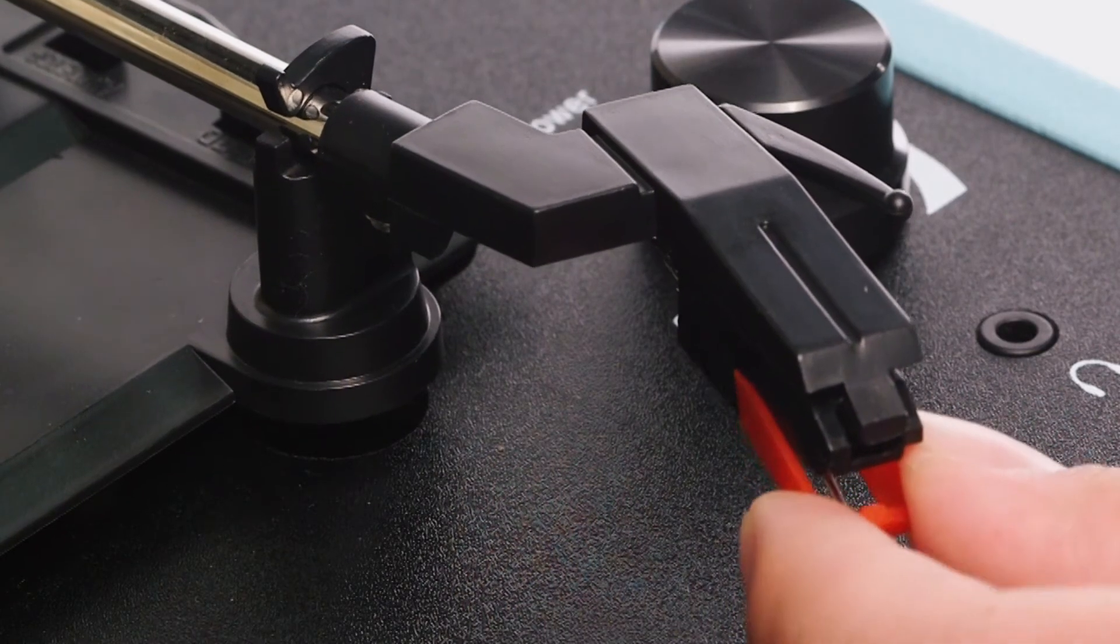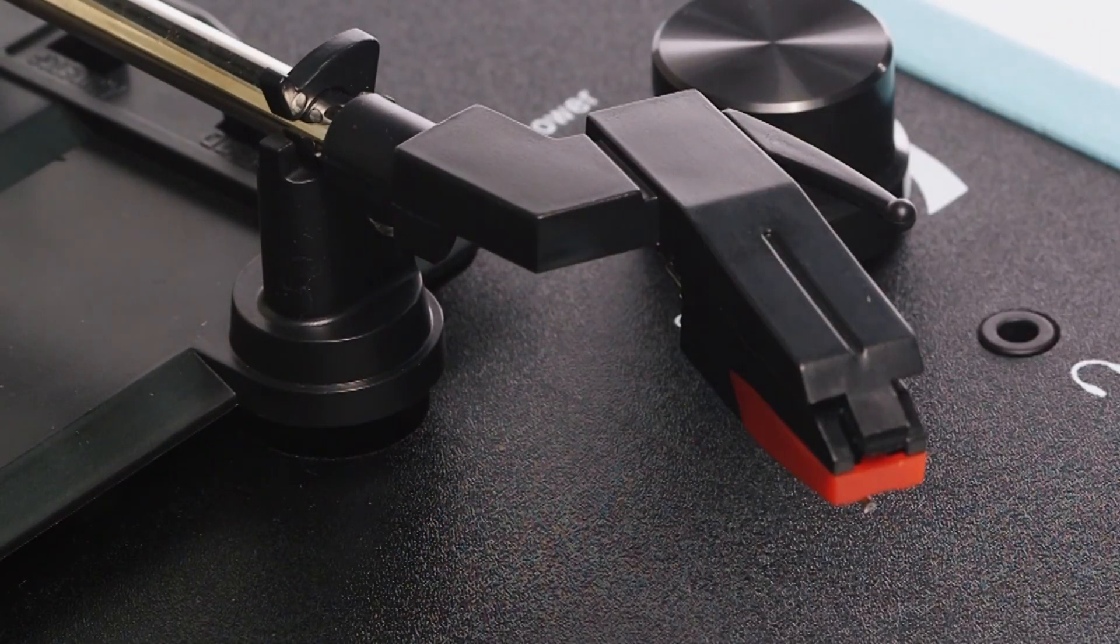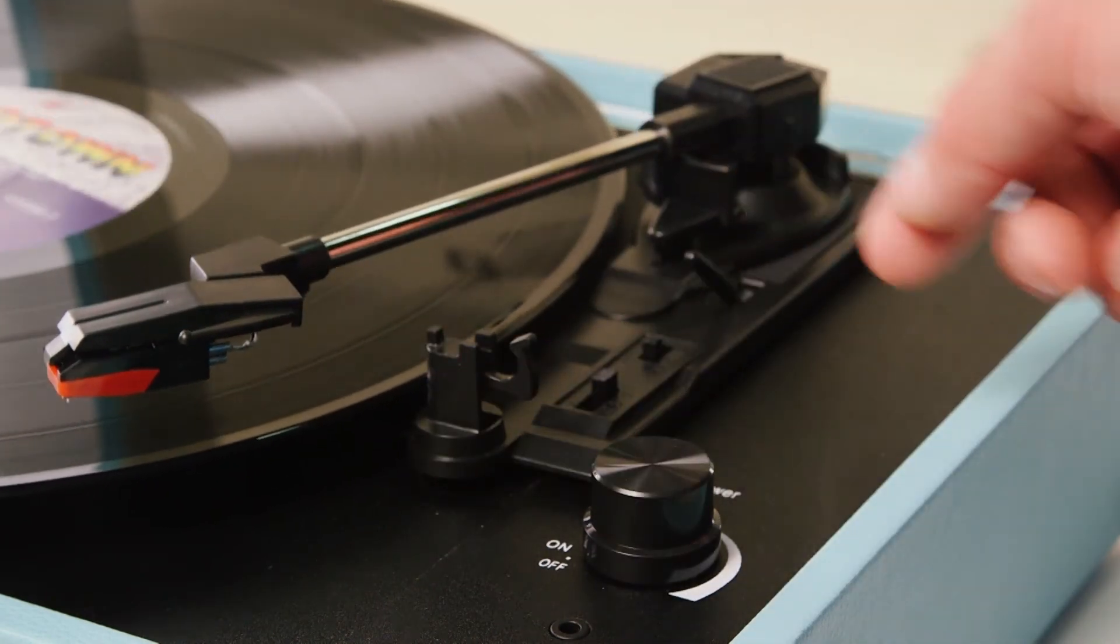Both sides of the stylus should be clipped in so that it is firmly mounted all the way around the tonearm. Your Bush turntable is now ready to use.